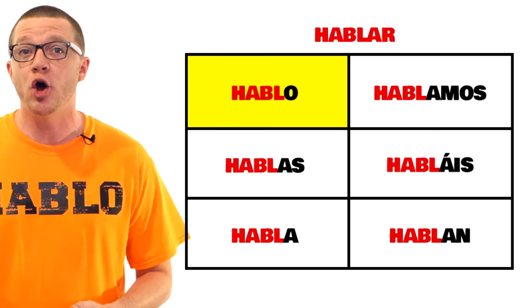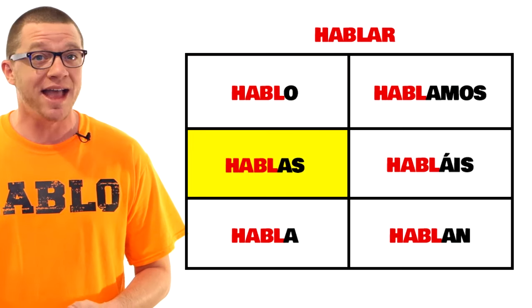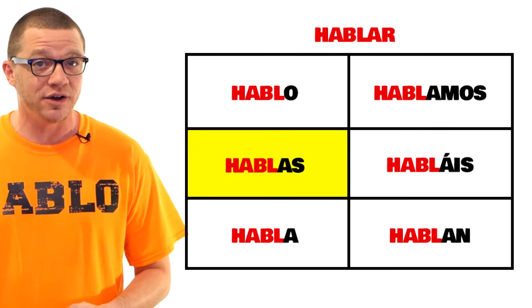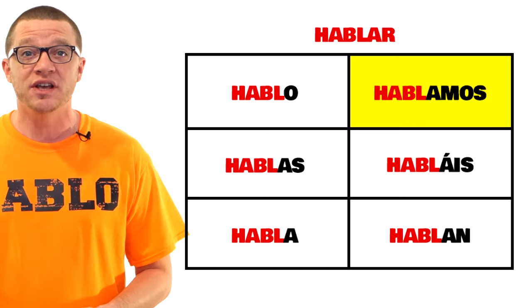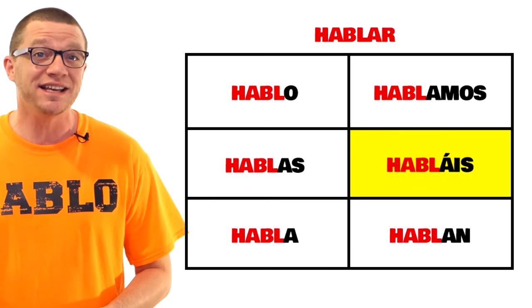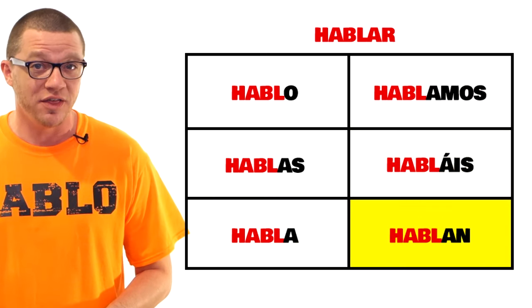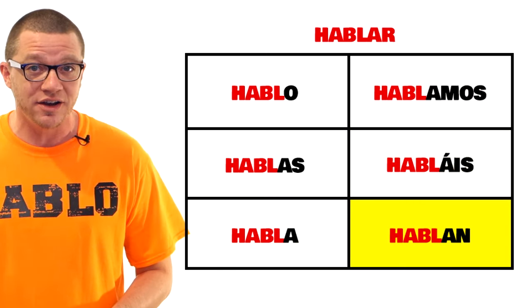Not so bad, right? Take off the ending, then add -o here, -as here, -a here, -amos here, -áis here, then -an here.